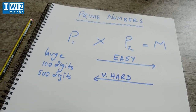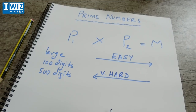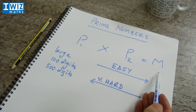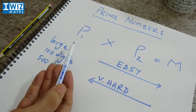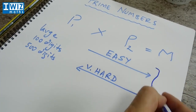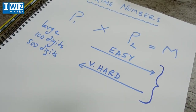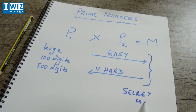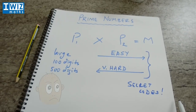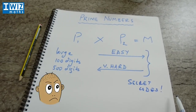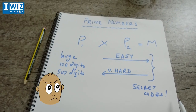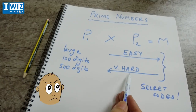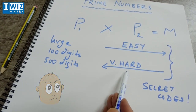It turns out to be very hard. And it's precisely this asymmetry — going in one direction, which is easy, and going in the other direction, which is hard — that is precisely what helps us develop secret codes. It should also be mentioned that there is no efficient method known to find factors of large numbers. Doing this, even with a computer, is actually really, really hard.